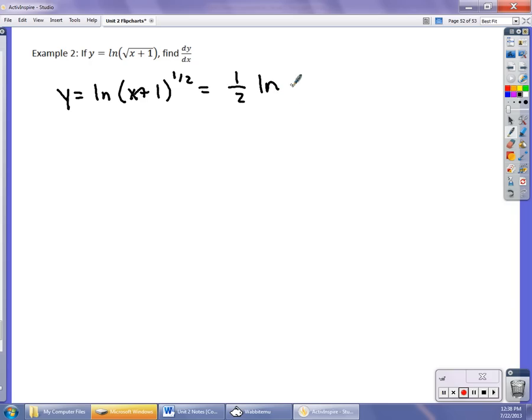So dy/dx = 1/2 times 1/(x+1), which equals 1/(2(x+1)). You'd probably see it written as 1 over 2(x+1), or some version of that. You might see the 2 distributed.